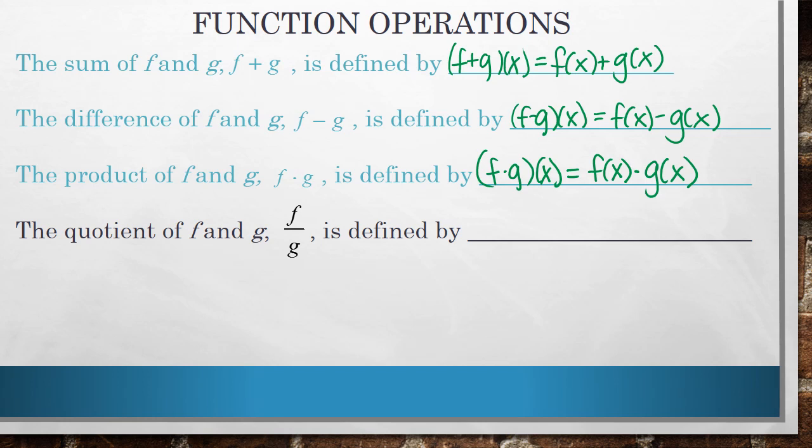And then lastly, the quotient of f and g is f over g, and it's defined as f over g of x equals f of x over g of x.